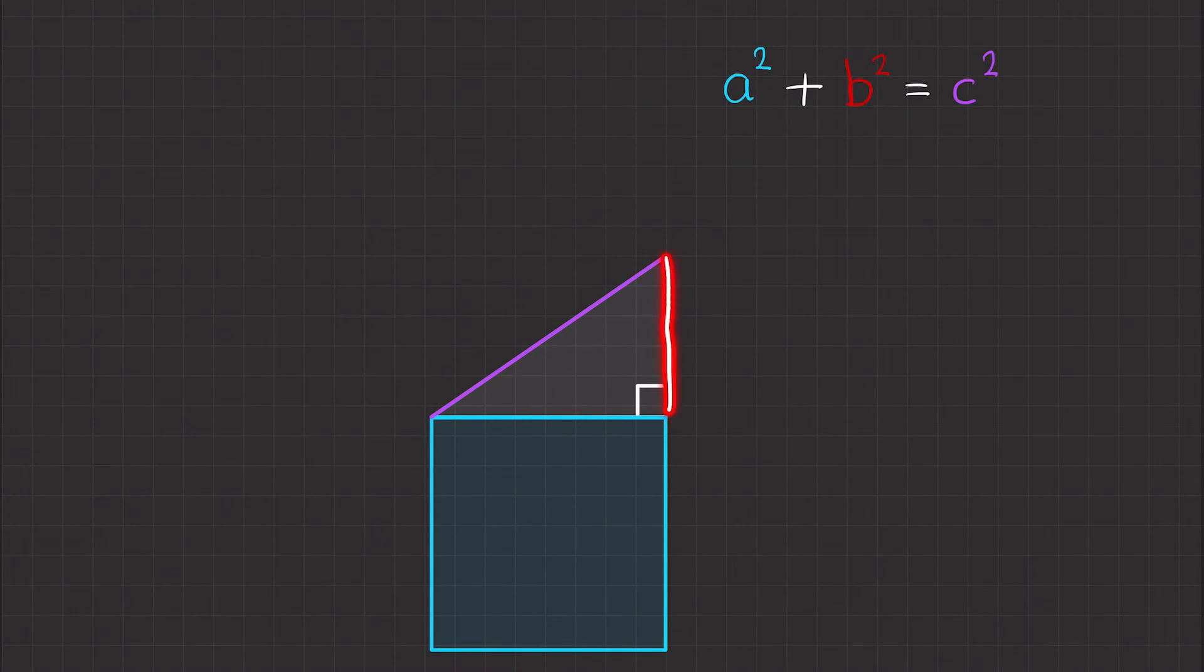We're going to do the same to this side here, which we've called side B. So if we imagine we've got this side length, we want to make this into a square, so we've got another side length of the exact same length. So then we've got a square. And we've got an area of B squared.